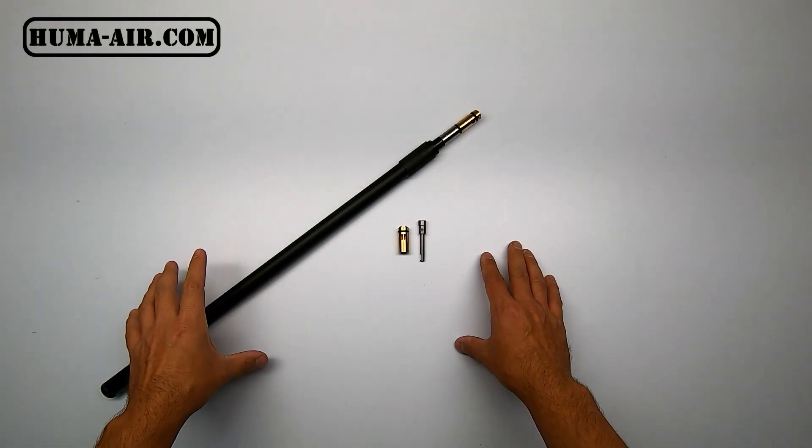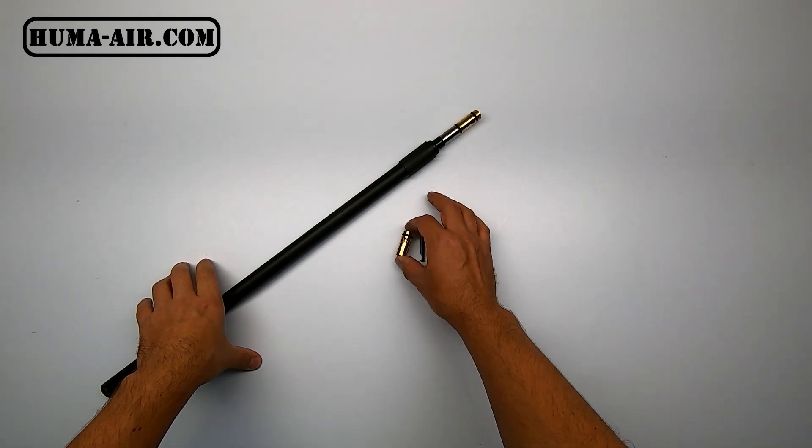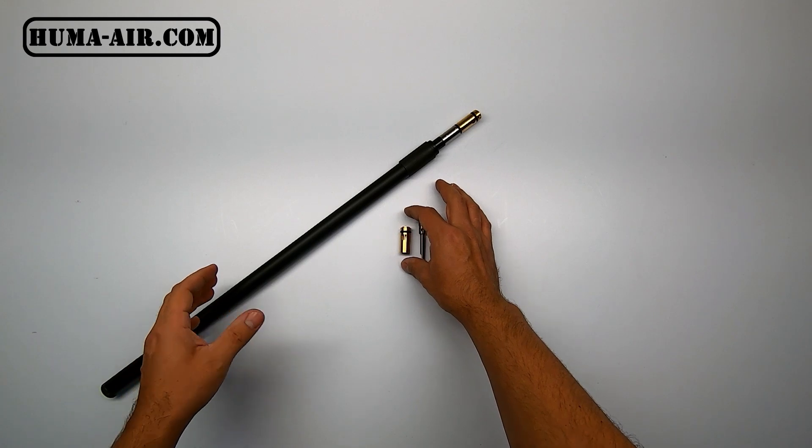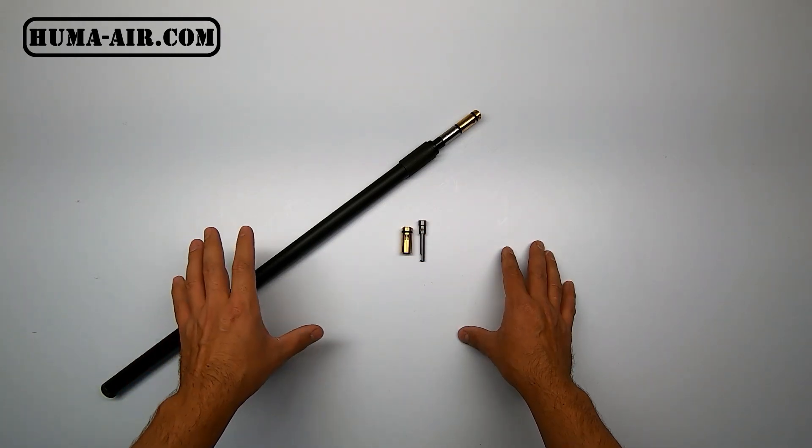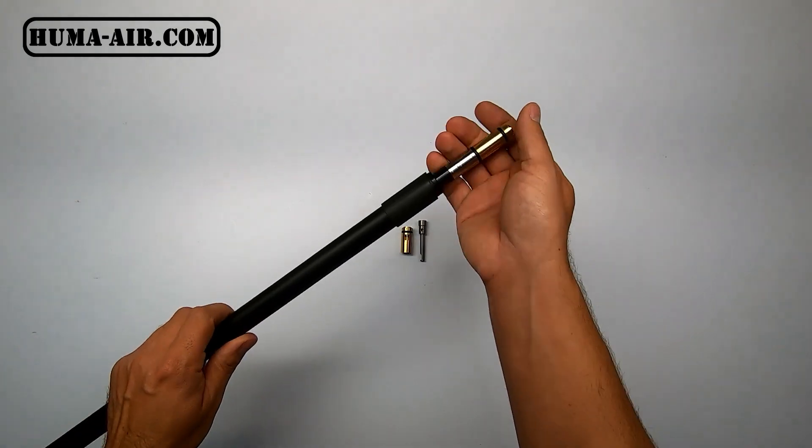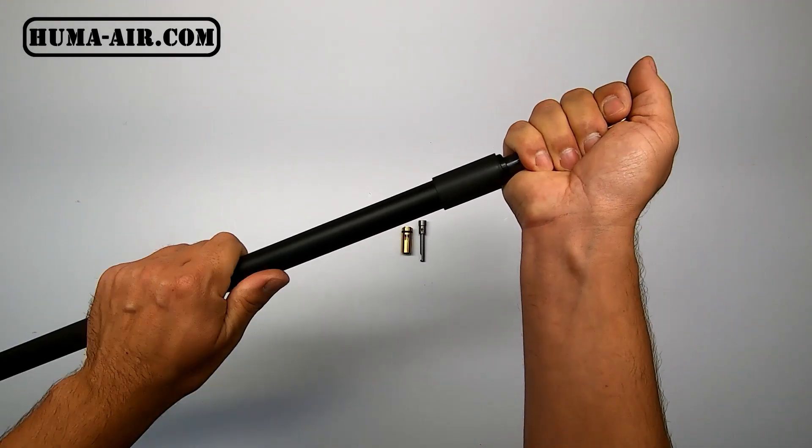So now that we have our baseline we can start installing the Yuma-Air high-flow dual-hole transfer port. Since installation process on both of the barrels is exactly the same, I'll be showing you only one on camera and do the other one off screen. First job you will have to do, remove your shroud.